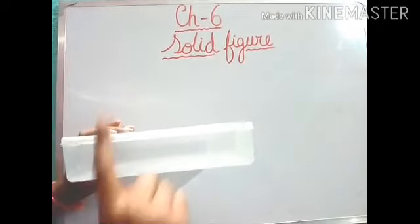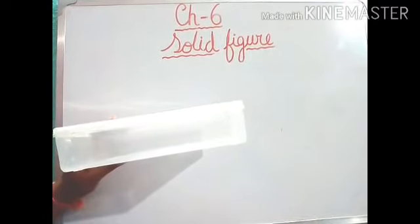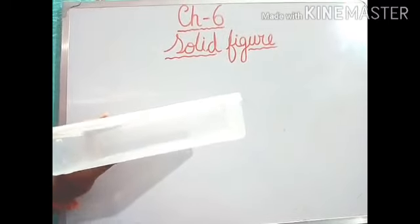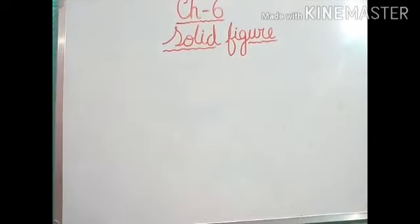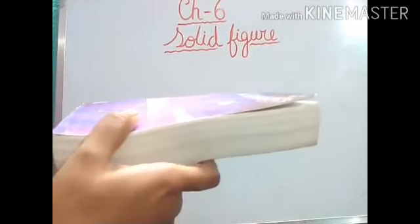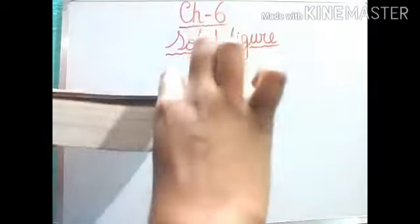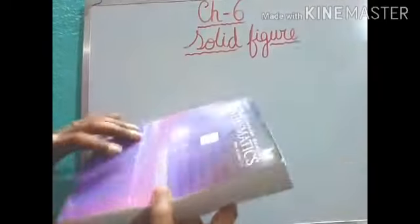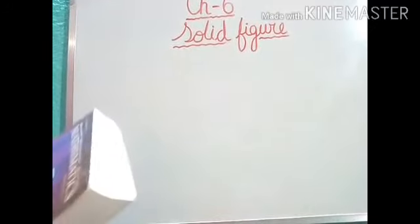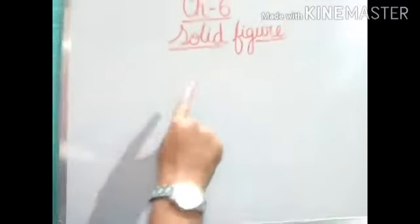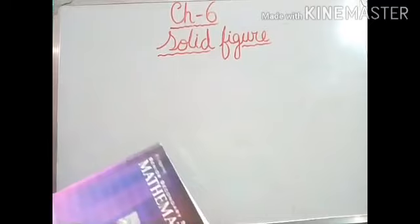Do you know what is the name of this type of shape? Yes, now we are going to learn about this. I am showing one more example, like this book also. See, that book has some thickness and it has all the edges and sides. Okay, first I will draw the shape, explain to you, then again I will show the example.